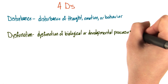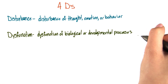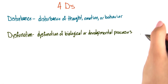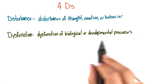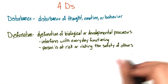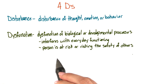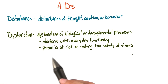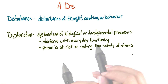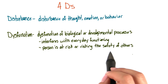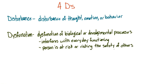Second, we have dysfunction. And here we mean dysfunction of biological or developmental processes. Dysfunctional behavior interferes with everyday functioning and can lead a person to being at risk, or the person is risking the safety of others.